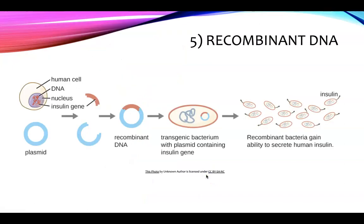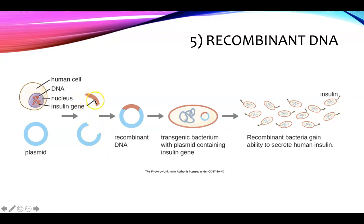Recombinant DNA is when you take one DNA source and add a gene or recombine that DNA in some way. For example, you take a human cell, isolate the insulin gene using special techniques, take a plasmid from a bacterium, cut it open, and splice the insulin-producing gene into that plasmid — this is called recombinant DNA. This is also called gene cloning because you're making many, many copies of the gene once you insert the plasmid back into the bacterium.